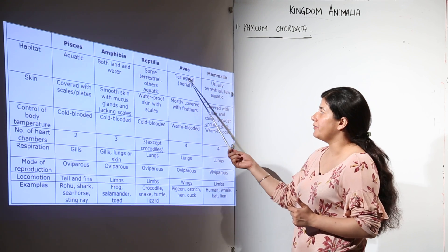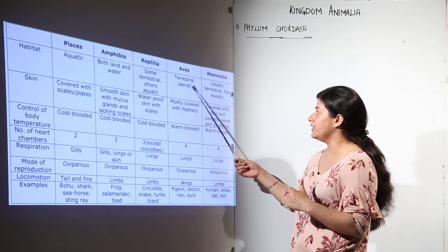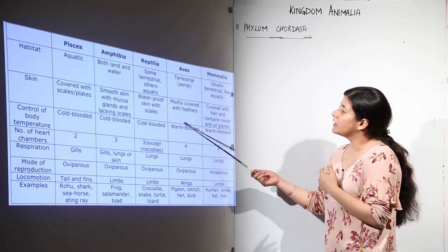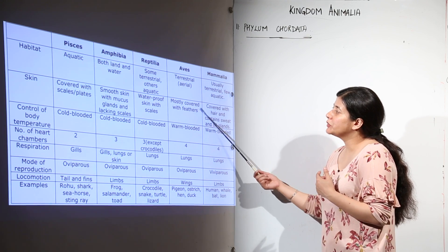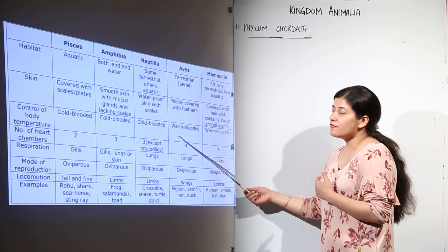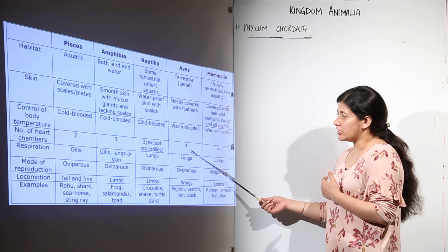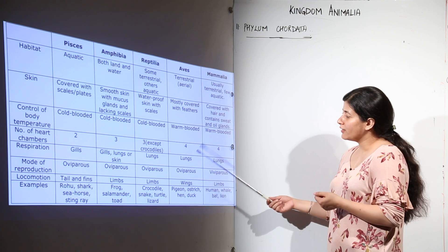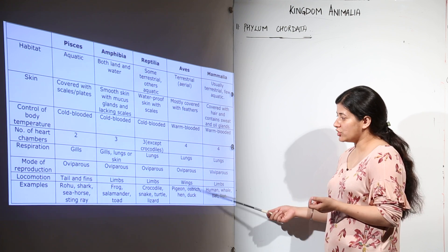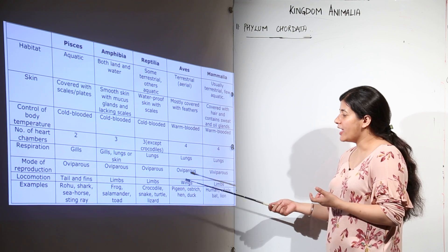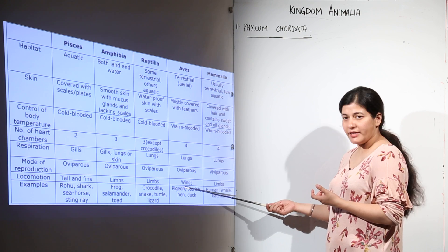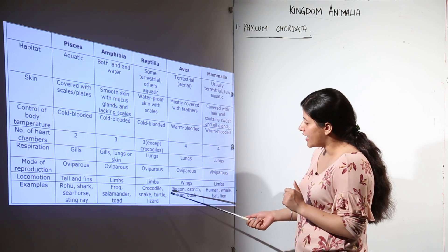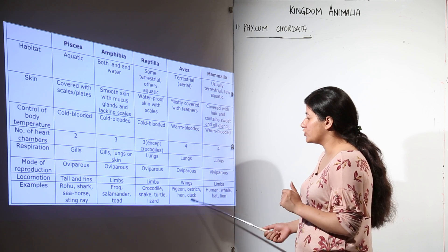Moving to the birds, their habitat is terrestrial or aerial when they are flying, though no bird stays in the air all the time. Their body is covered with feathers, they are warm-blooded, the number of heart chambers is four, they have lungs for respiration, they are oviparous — laying eggs — and they have wings for locomotion along with two pairs of limbs. Examples include pigeon, ostrich, hen, and duck.